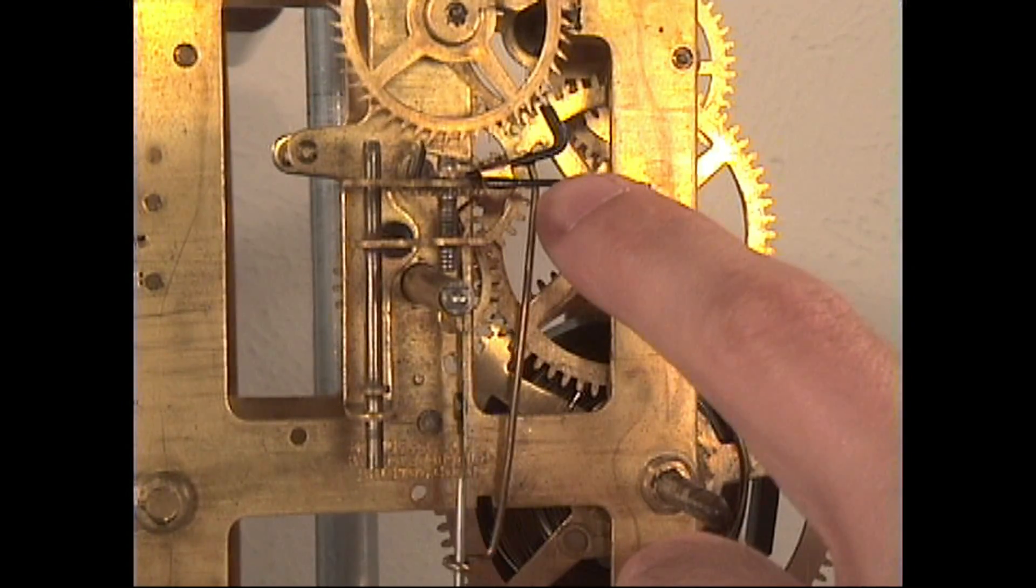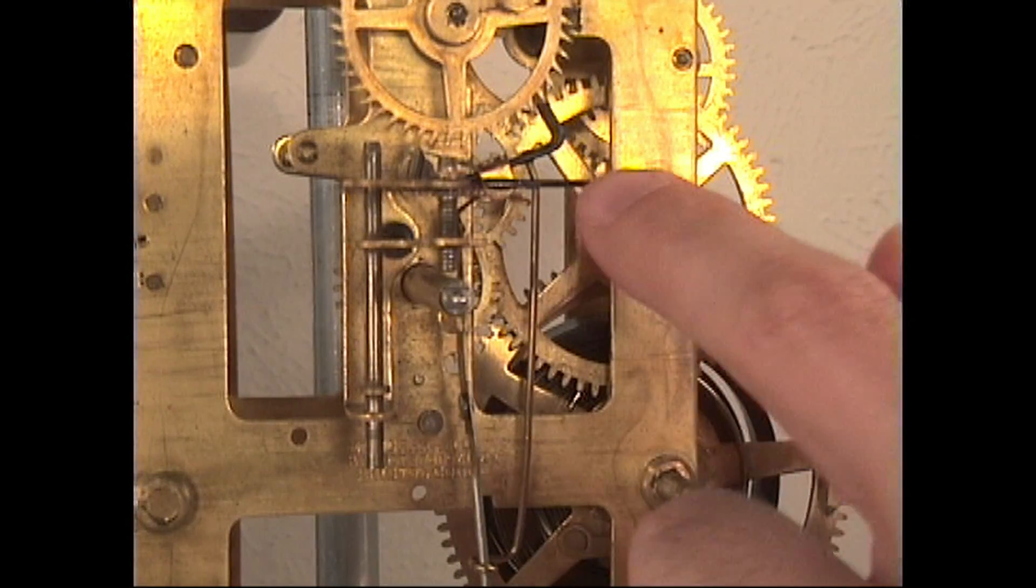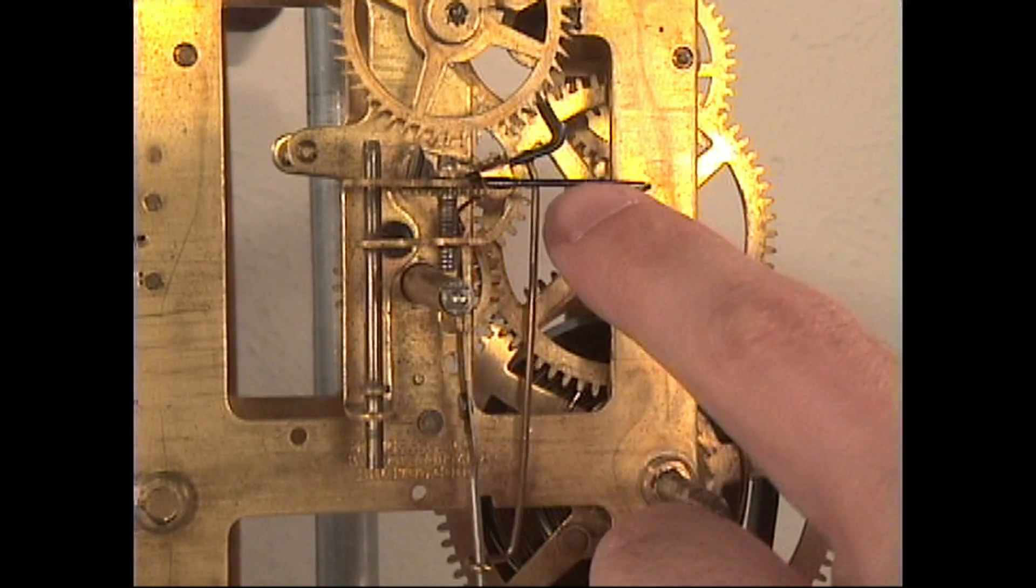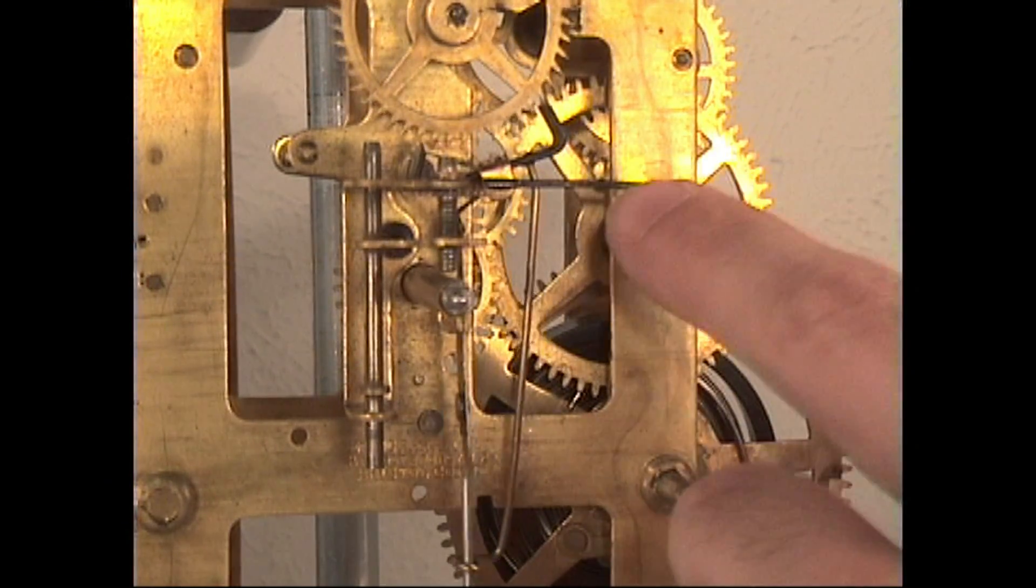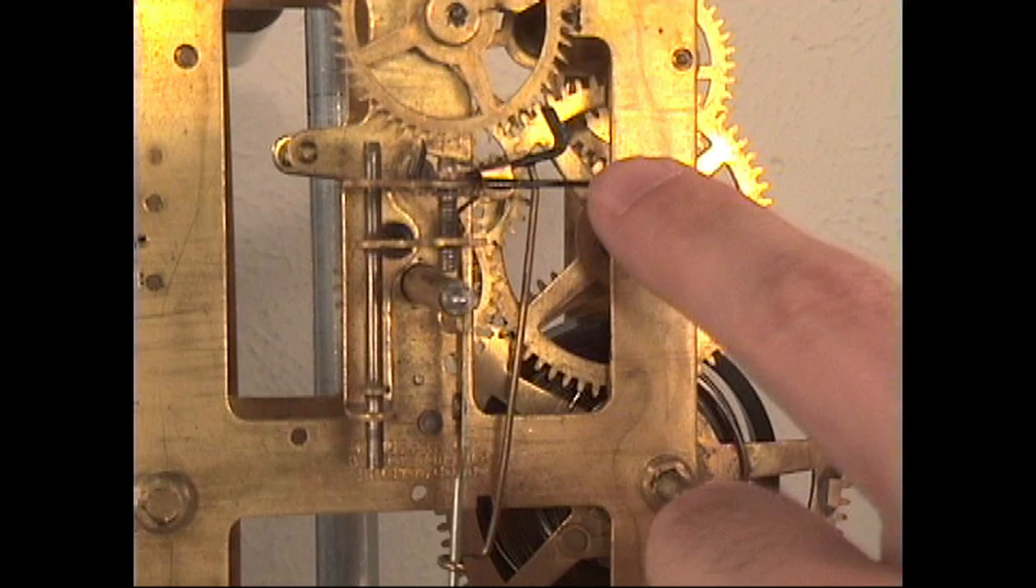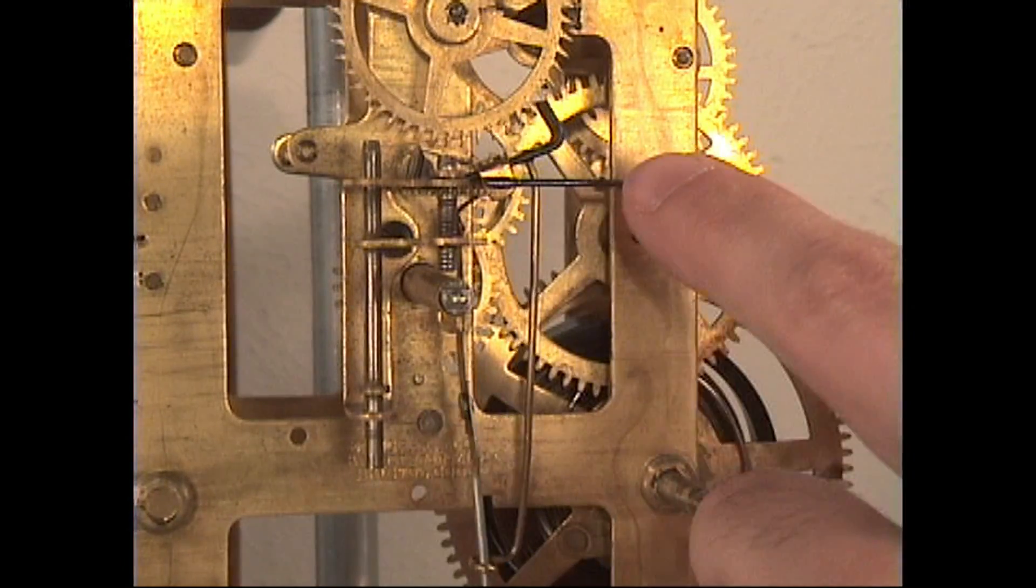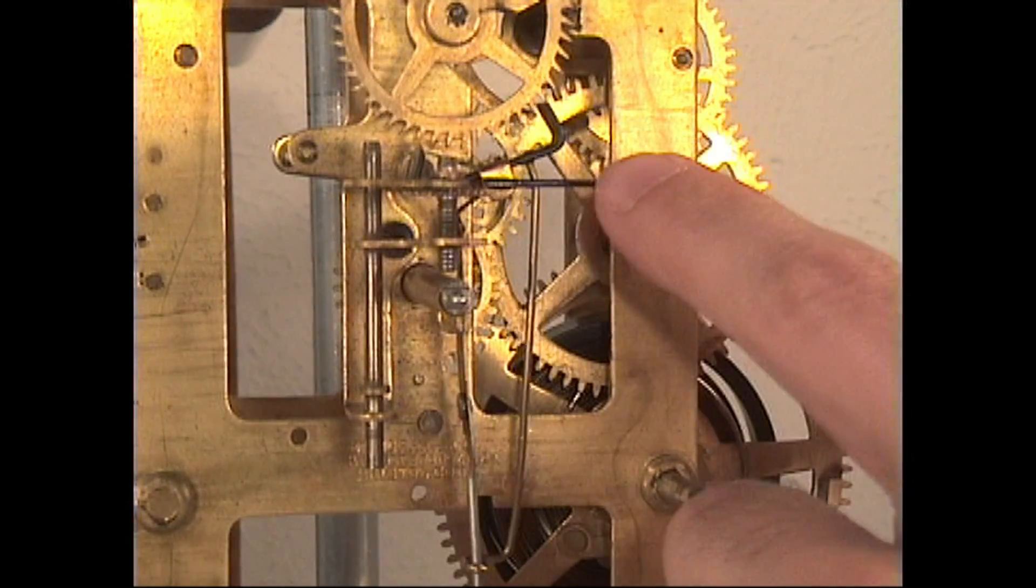And that's one of the primary reasons why they have their different names. Now the verge is made from flat steel and each of the pallet ends are hardened and polished.